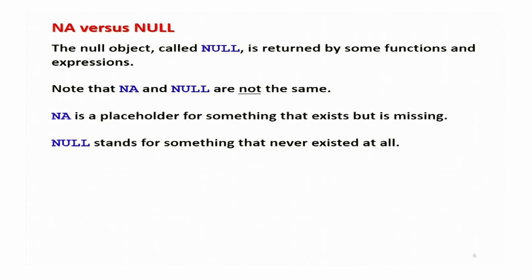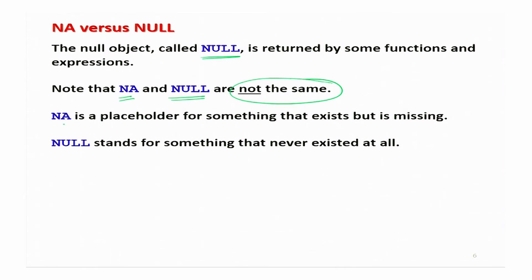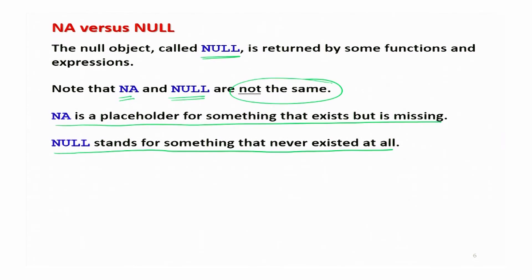Just like NA, there is another reserved word: NULL (all capital letters). Sometimes when you execute a function it gives an outcome of NULL. Let me explain the difference between NA and NULL. NA is a placeholder for something that exists but is missing, while NULL stands for something that never existed at all.